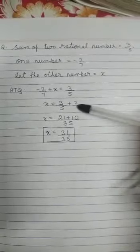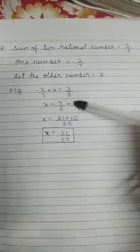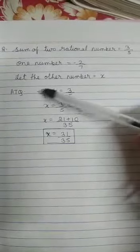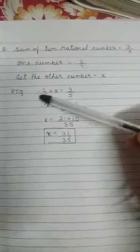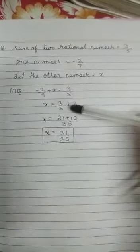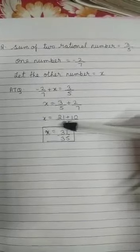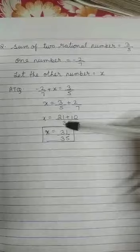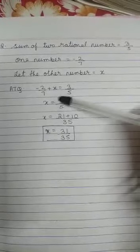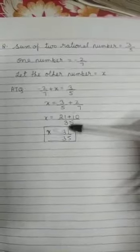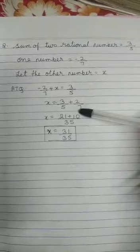We write X here and we shift this number to another side. When we shift the number, the sign will be changed and because it was a negative number, it will change to positive number. Then again we find the LCM. LCM is 35. Then 35 divided by 5, answer is 7. 7 into 3, 21. Then 35 divided by 7, that is 5.